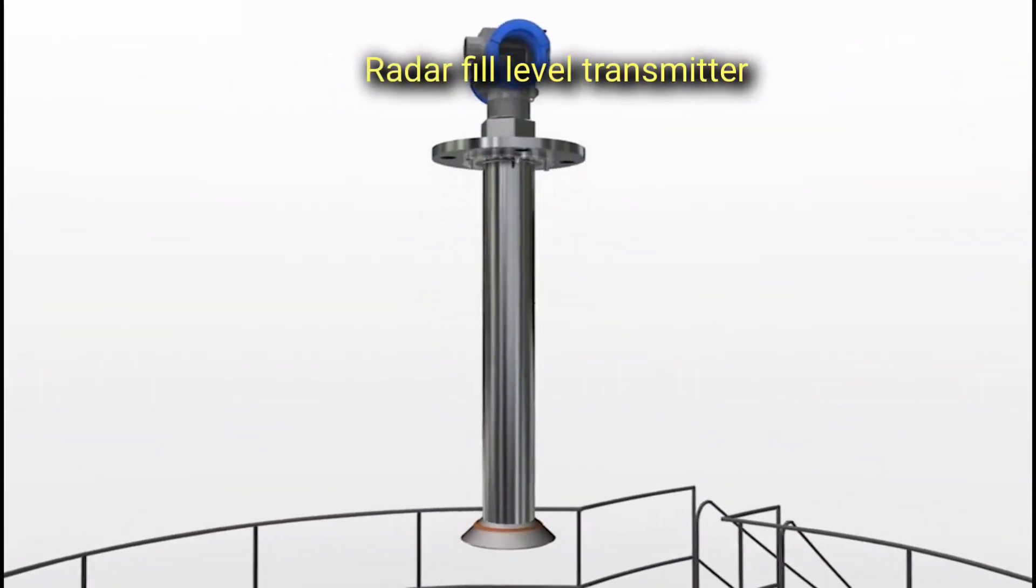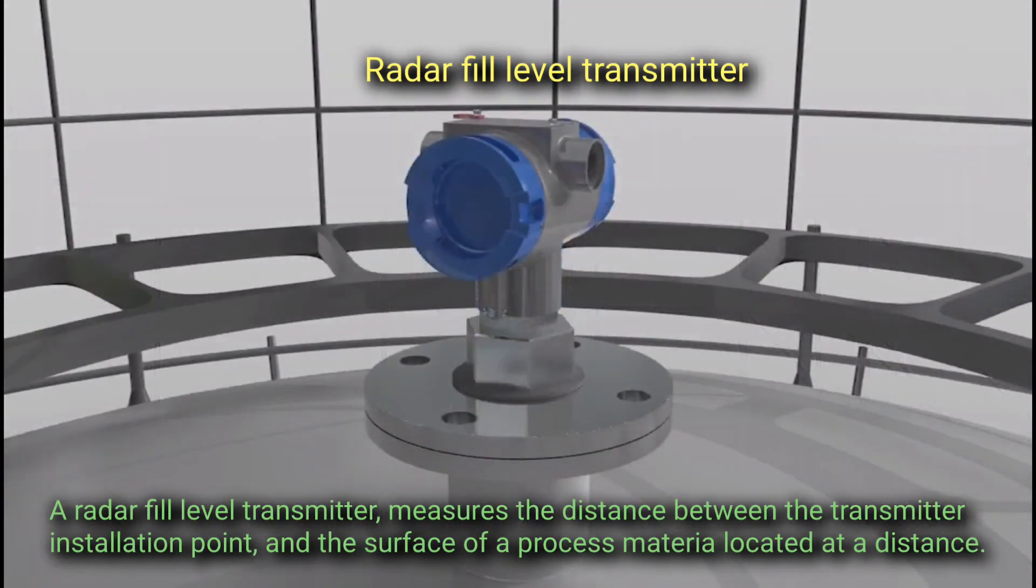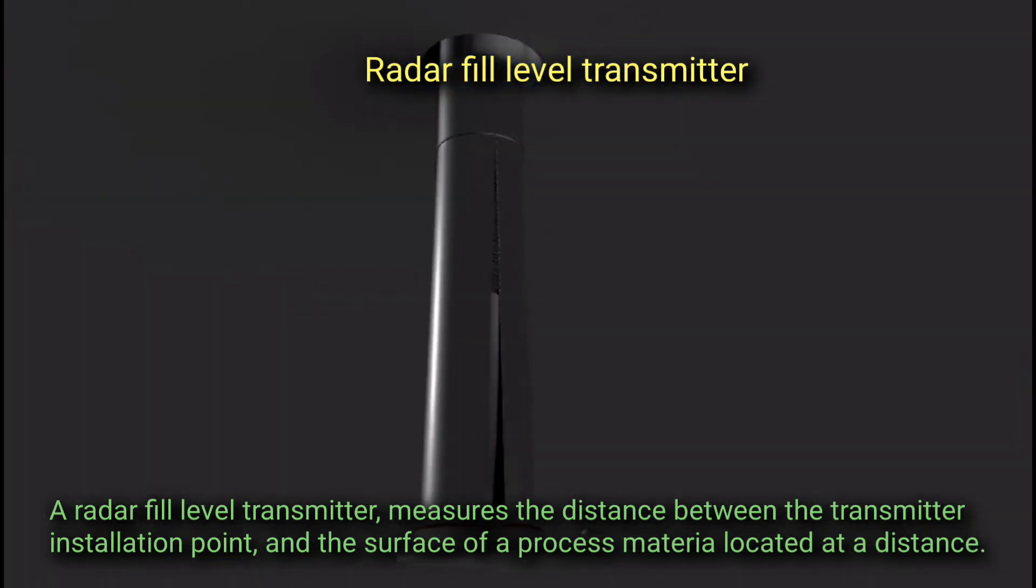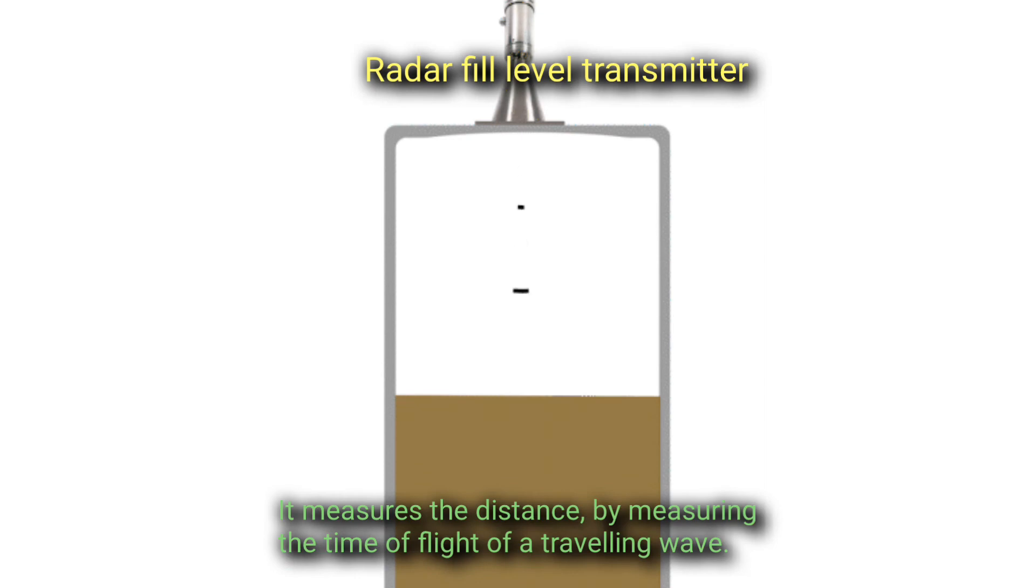Radar Fill Level Transmitter. A radar fill level transmitter measures the distance between the transmitter installation point and the surface of a process material located at a distance. It measures the distance by measuring the time of flight of a traveling wave.